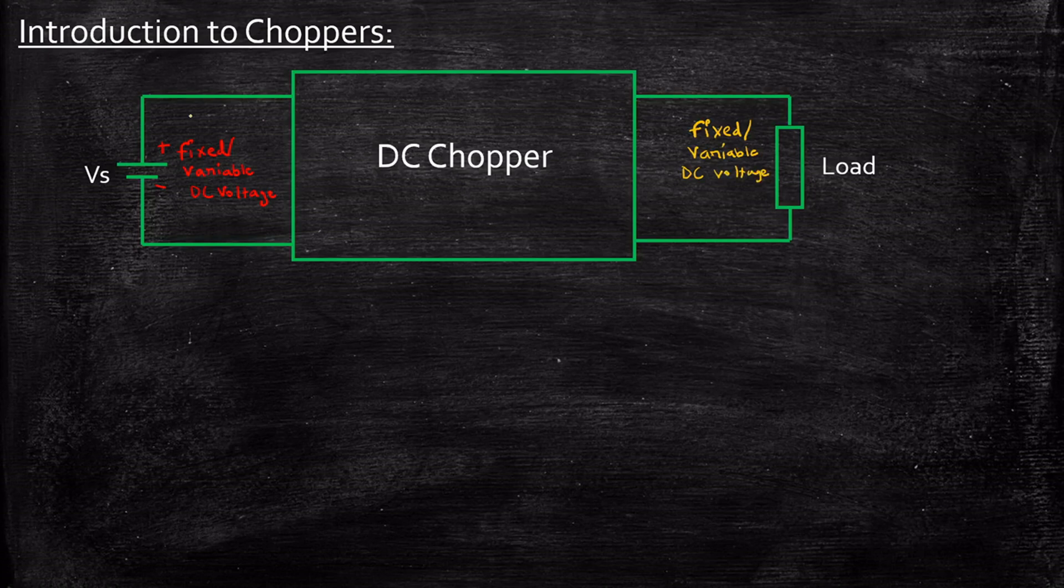When we say this, the input can be either stepped up or stepped down. Meaning to say, if we have 5V, it can be increased to 12V at the load side. Or when we have 12V at the input side, it can be decreased to 5V at the output side. These are just examples.